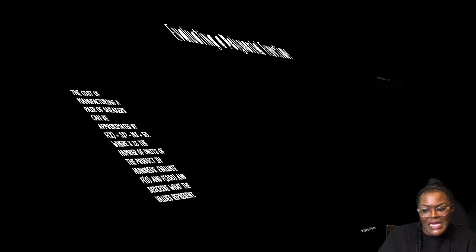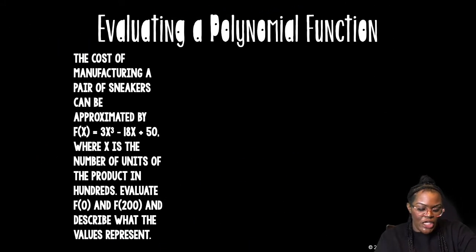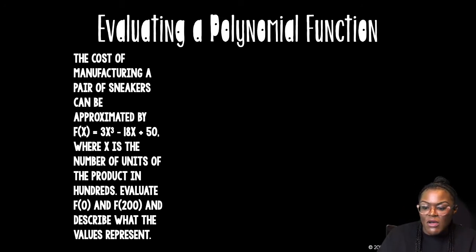Evaluating a polynomial function. When I'm evaluating a polynomial function, basically I'm just plugging in a number. So the cost of manufacturing a pair of sneakers can be approximated by f(x) = 3x³ - 18x + 50, where x is the number of units of the product in hundreds. So evaluate f(0) and f(200) and describe what the values represent. So f(0) basically means plug in 0 for x. f(200) basically means plug in 200 for x. It's not that bad.